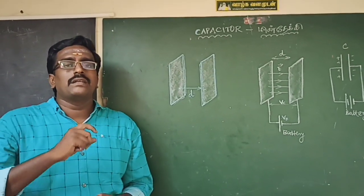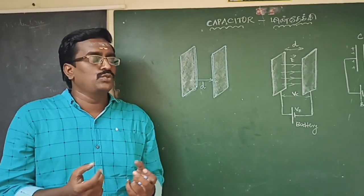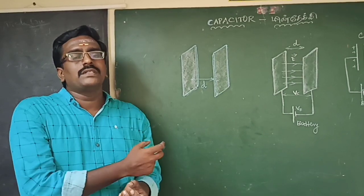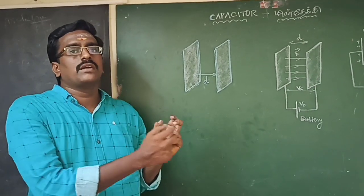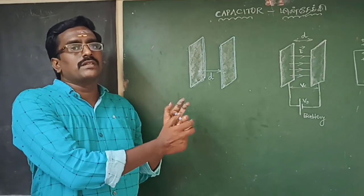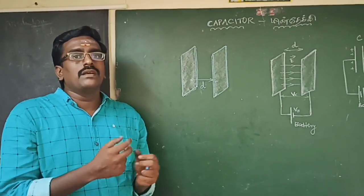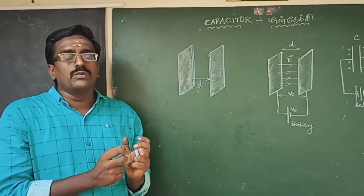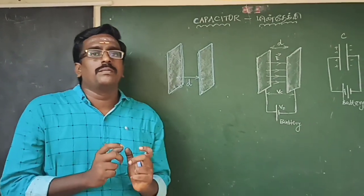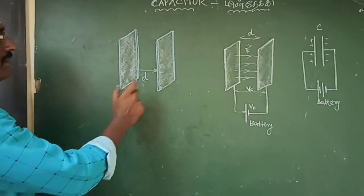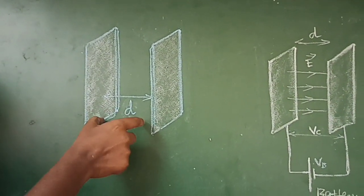A capacitor can store the charge for 10 days or 15 days. It consists of two parallel plates or sheets separated by a small distance.